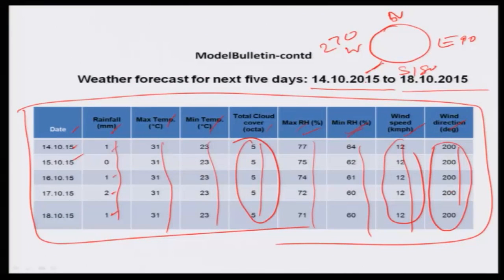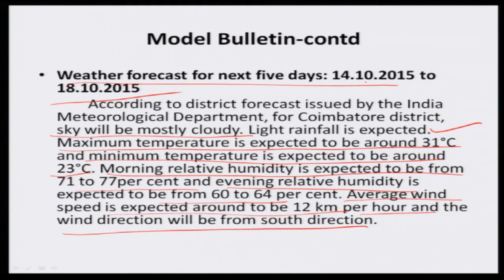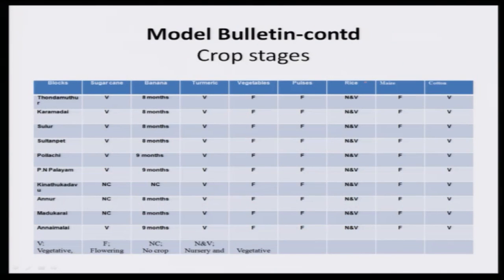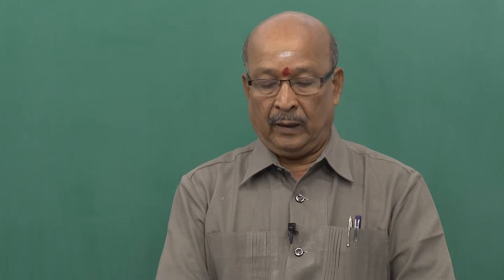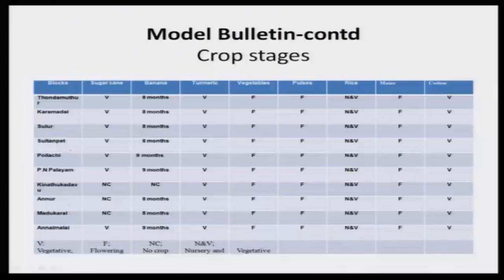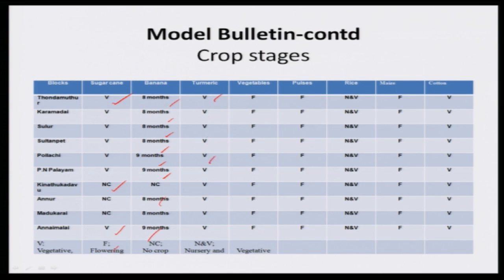Then, crop stages. You have considered your weather forecast, critically analyzed it, and received information from the Department of Agriculture or Extension Department about what crops are being raised at the time of the forecast and what their stages are. These are all blocks — V means vegetative stage, NC means no crop. Banana at eight months must be in the bearing stage. Turmeric, vegetables in flowering stage, pulses in flowering stage, rice in vegetative stage, and some nursery area in flowering stage. This stage is very critical.